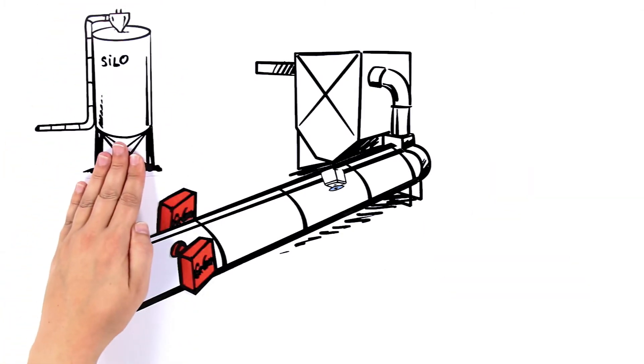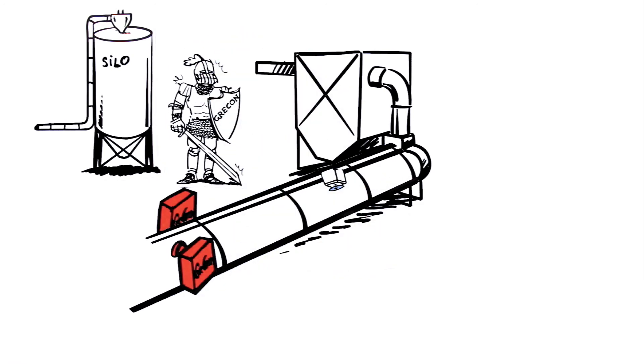The areas at risk, such as filters and silos, are protected, while the production process continues uninterrupted.